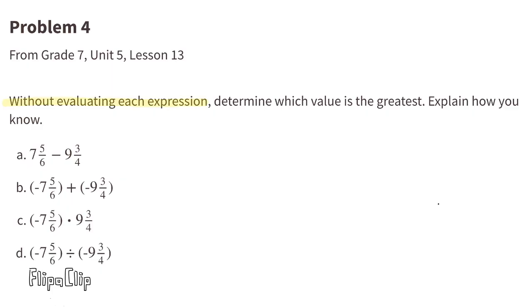Number four: without evaluating each expression, determine which value is the greatest. Explain how you know. A: seven and five-sixths minus nine and three-fourths will equal a negative value. B: a negative plus a negative is going to equal a negative value.